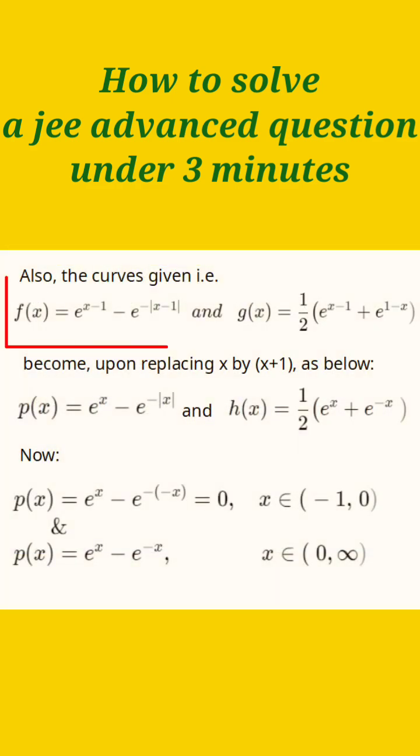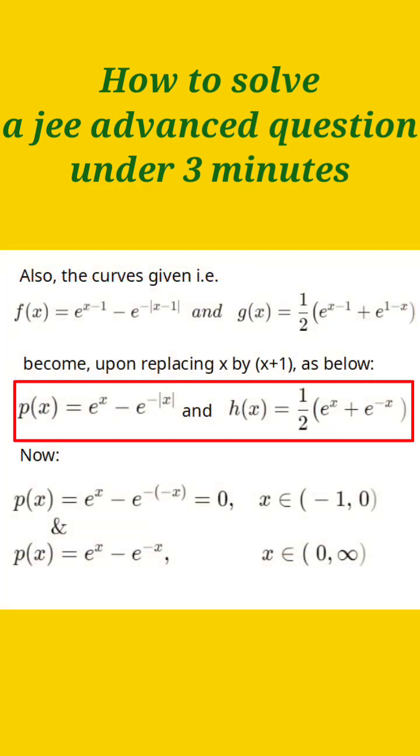Now let's see how the changes affect these functions. The functions become like this, so we are naming them p(x) and h(x). x minus 1 becomes x because x is replaced by x plus 1, and similarly the other changes.